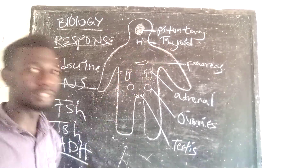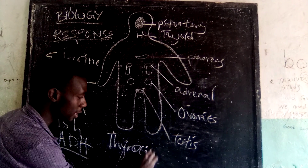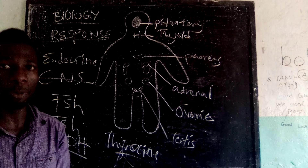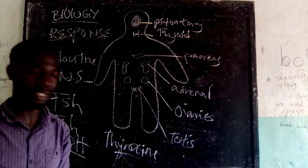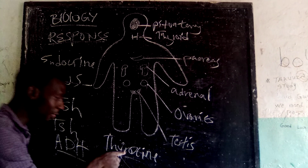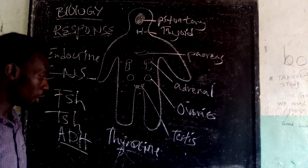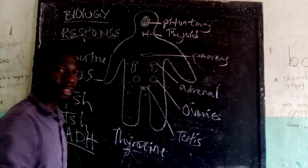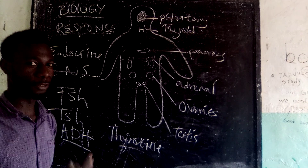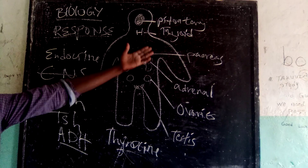In our neck, we have the thyroid gland. This thyroid gland produces a hormone known as thyroxine. Thyroxine is also referred to as the growth hormone. It is responsible for our growth, the increase in mass, and the increase in size. Little production of thyroxine results in dwarfism — it results in people becoming short. And excess production of thyroxine results in gigantism, like a very tall person — it means they have a high excess of the thyroxine growth hormone.